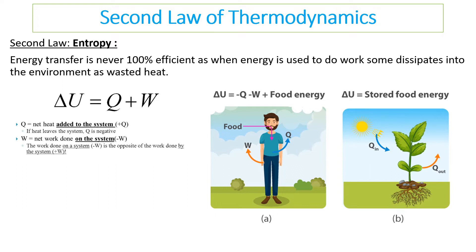You can calculate the energy in a system using this equation: energy equals q (heat energy) plus the work done — so energy is q minus w plus the food energy added.